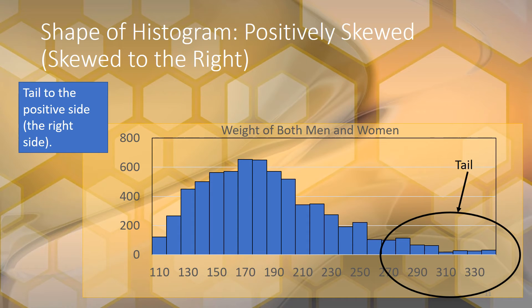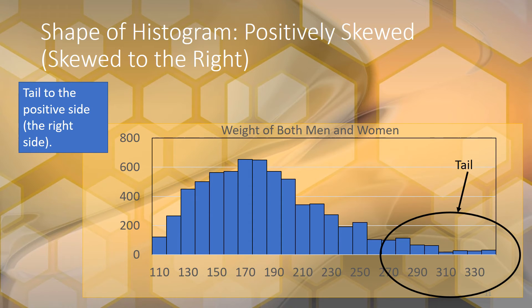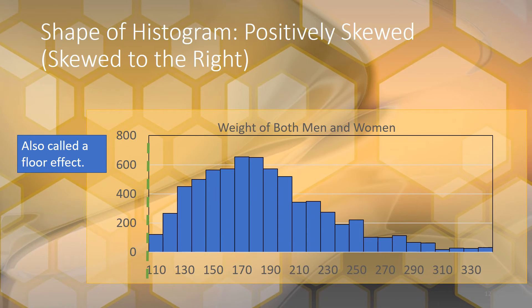The bell shape had two symmetric tails on both sides. In a positively skewed histogram, we only have a tail on the right side, which is where the higher numbers are — that's why it's called skewed to the right or positively skewed. Weight is positively skewed because most people have weights around 150–170 lbs, but there are some outliers with higher weights in the 300s. We don't tend to have people below 100 lbs, so there's no tail on the left side.